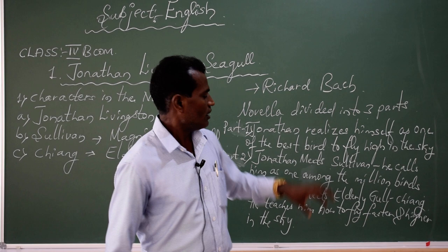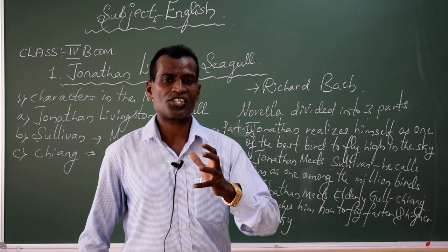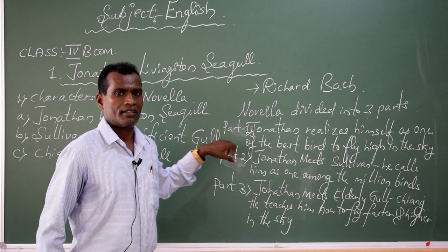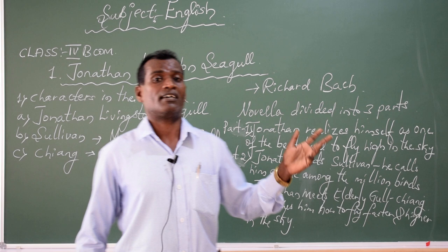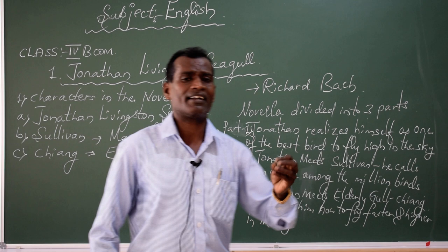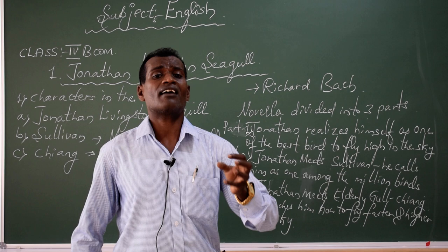The entire novella brings out a very important message — practice makes man perfect. Jonathan Livingstone Seagull is also like a normal bird, like the rest of the other seagull birds. But throughout his life, every day, he spends several hours flying higher and faster in the sky.